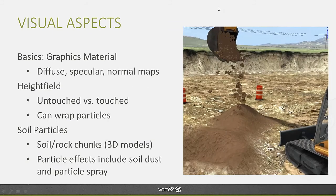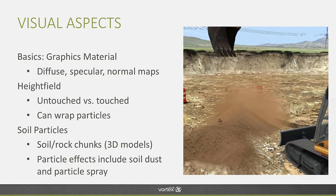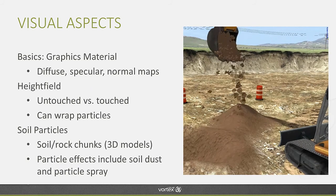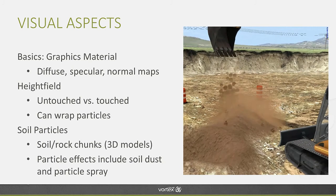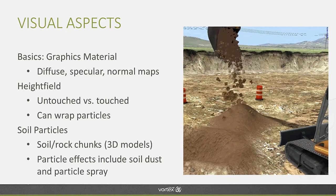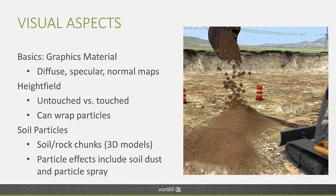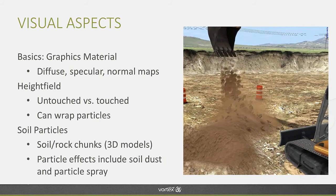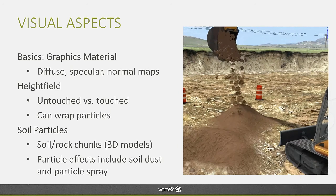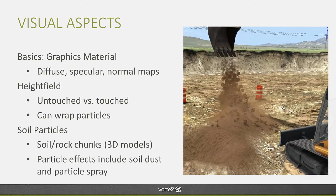The visual aspects are also very important in an earthwork system simulation. Vortex uses graphics materials — an established concept in Vortex — where you can set up diffuse, specular, and normal maps, combined with specialized simulation techniques to visualize soil naturally. A height field displays deformed soil texture when you dig into it or dump material on it. Soil particles are represented as 3D models, and when cutting or dumping, you'll see dust clouds arising and particle spray effects emitting from the bucket as soil leaves it.